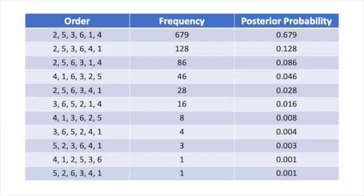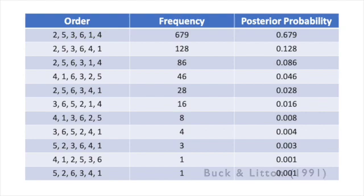One of the problems with all of the methods discussed so far is that they yield a single result that we have to accept as true, even though there may be other solutions that are just as likely or almost as likely. Buck and Litton instead try to take problems of sample size and residual artifacts seriously by using a Bayesian approach and a Gibbs sampler. This involves modeling the processes that create the artifact distributions and then simulating them 1,000 times, allowing them to estimate the probability of various possible orders. The most probable order, with a probability of about 68%, is the same as you would get with the Kendall method, but several other possibilities have significant probabilities too.